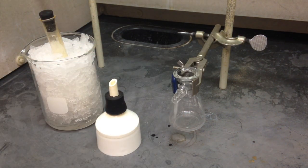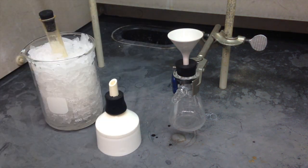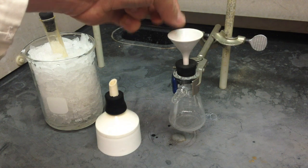That's a Buchner funnel. We don't want that. Put that aside. This is a Hirsch funnel. We want the Hirsch funnel. That's the little guy. That's the one we're going to use. And the matching little filter paper. It's this little tiny guy. Just stick it in there.